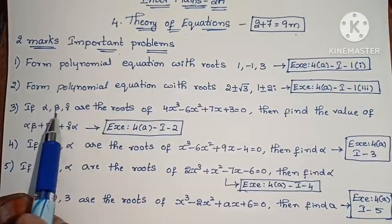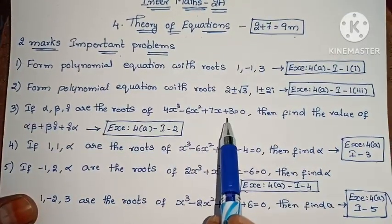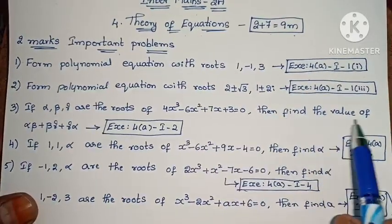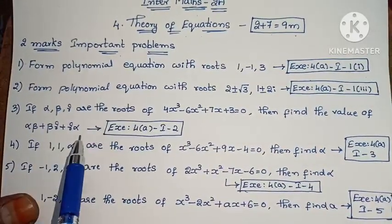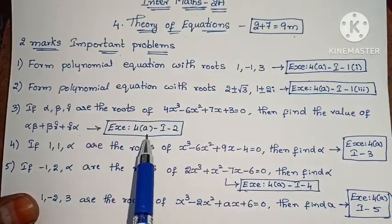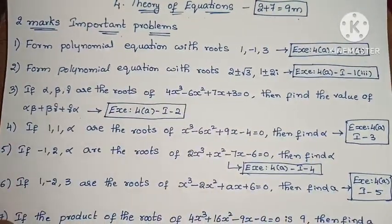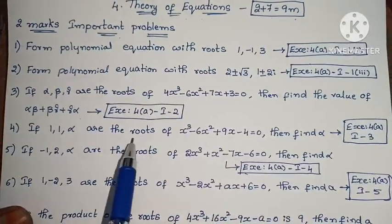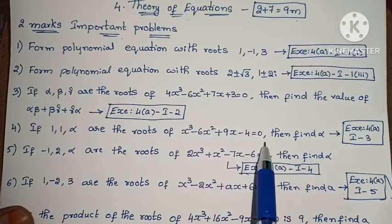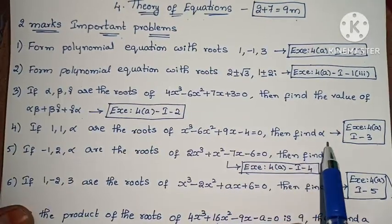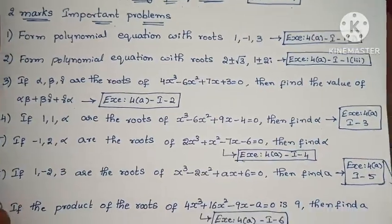Next, if alpha, beta, gamma are the roots of 4x³ minus 6x² plus 7x plus 3 equals 0, then find the value of alpha·beta plus beta·gamma plus gamma·alpha. Exercise 4A, first Roman numeral, second one. Next, if 1, 1, alpha are the roots of x³ minus 6x² plus 9x minus 4 equals 0, then find alpha. Exercise 4A, first Roman numeral, third one.